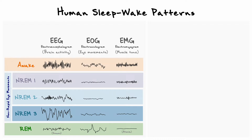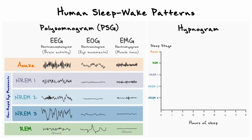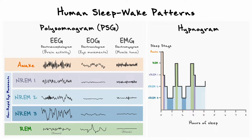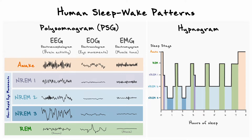Altogether, the use of the EEG, EOG, and EMG to characterize sleep phases is known as a polysomnogram. While recording these measures across the night for an individual at sleep, we can come up with a plot called the hypnogram that traces how the different sleep stages evolve across the night. This final figure represents the typical sleep architecture in humans, and we will later see what can happen to it when orexin transmission is impaired.